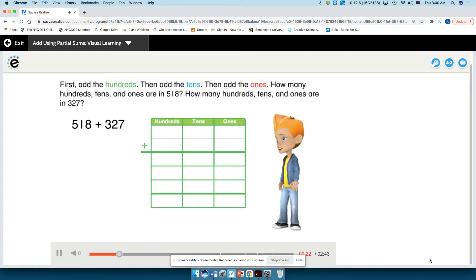How many hundreds, tens, and ones are in 518? How many hundreds, tens, and ones are in 327?